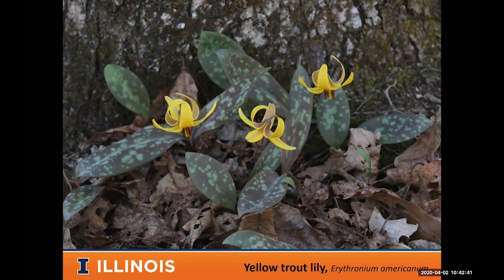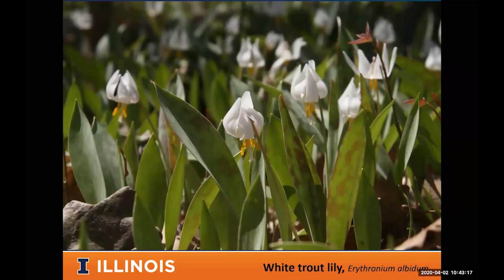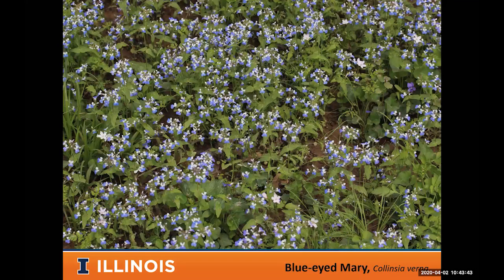Trout lilies — also called dog-toothed violets — get their name because the leaves look like a speckled trout. There are two major common kinds: yellow trout lily and white trout lily. They have delicate, beautiful flowers. One interesting thing is that you'll often see hillsides of plants that just have leaves and no flowers. The white trout lily tends to grow in slightly lower, wetter sites; I rarely see them intermixed — it's usually one or the other. Both have very similar foliage and are some of our most beautiful wildflowers.